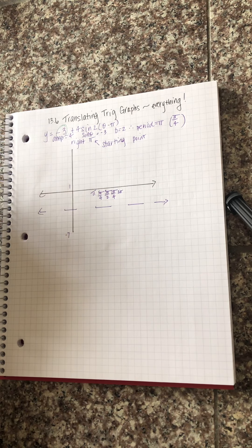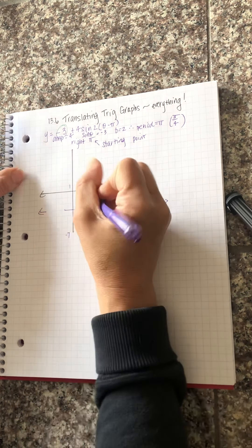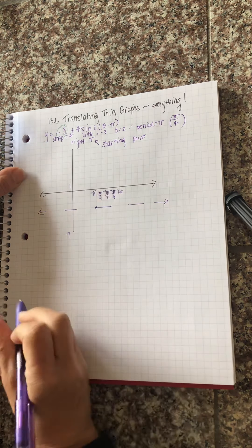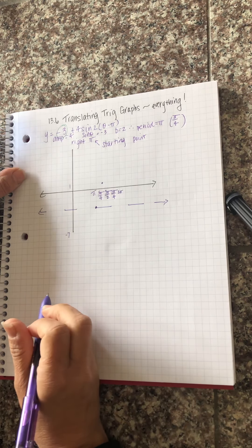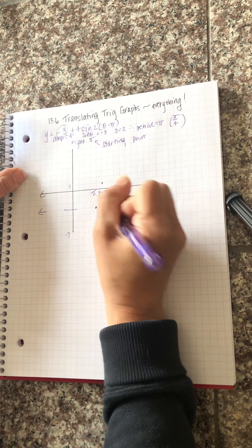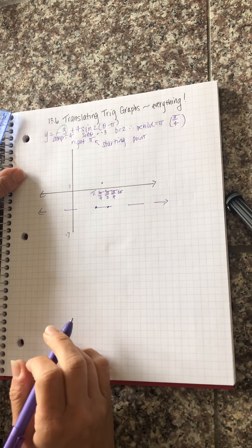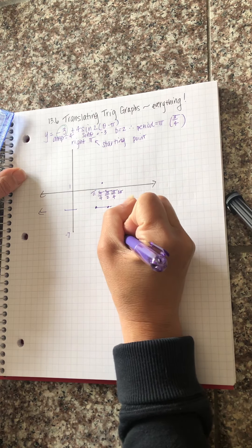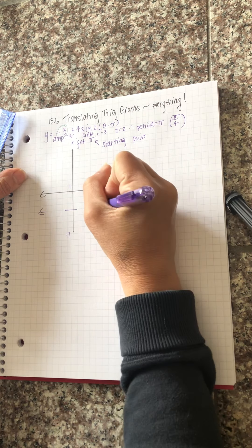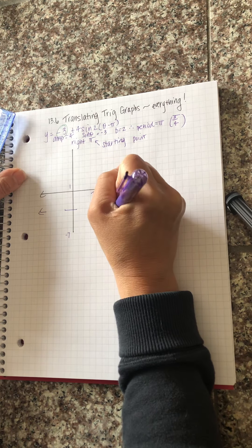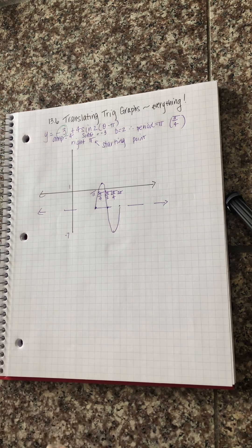Okay so it is a sine curve so I'm going to start on the sinusoidal axis and then I'm going to go up to the high point which is one. I'm going to go back to the axis which is at three pi over two. I'm going to go down to negative seven and then back to two pi and that is one wave.